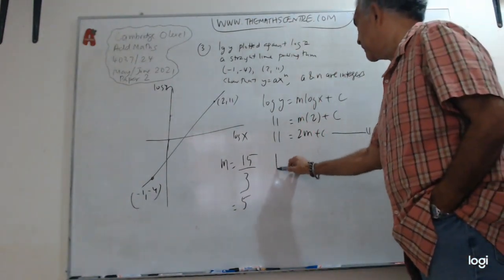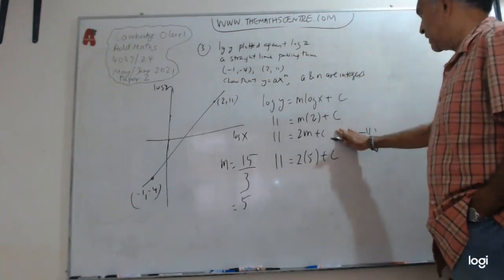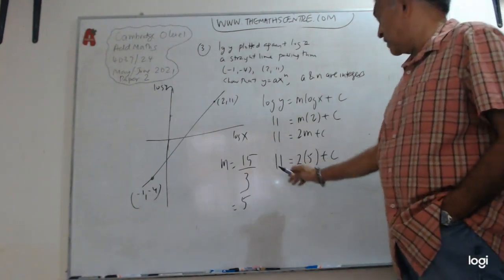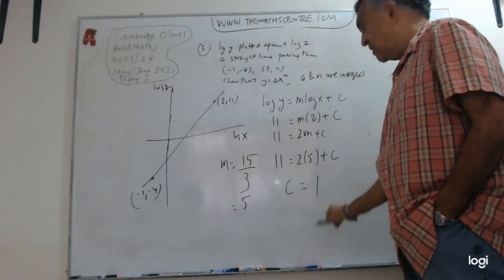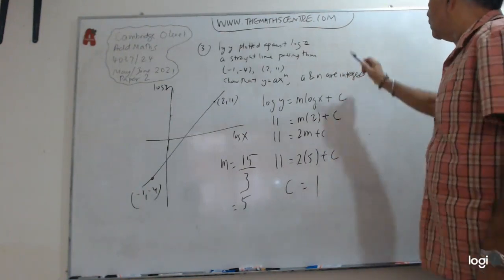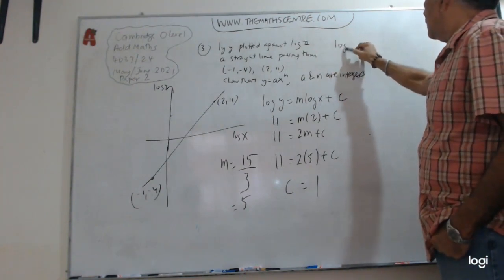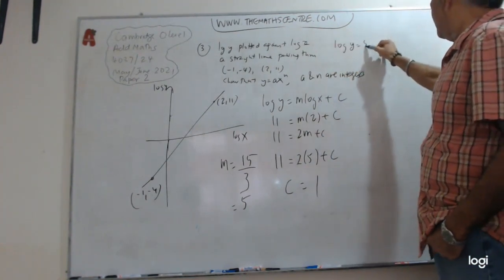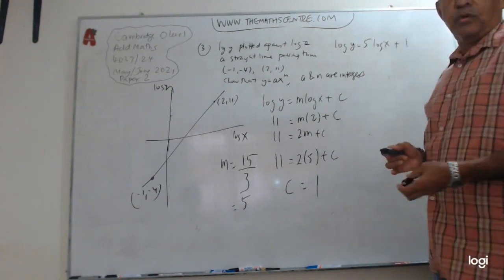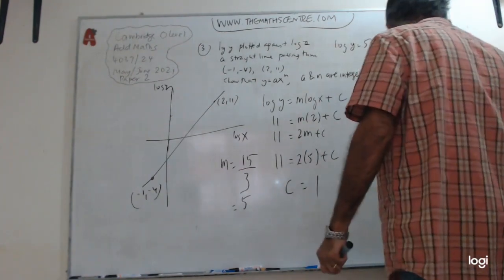So now I have 11 equals to... I'm going to write it here. Hope you all can see this. So I can write log Y equals to, what's my gradient? 5 times log X plus 1. Looks good? Yeah, we're almost done. We just want to write it in the way that they've asked you to write the solution.